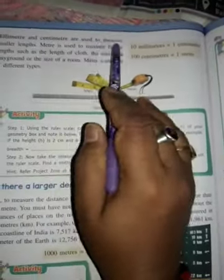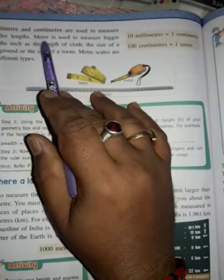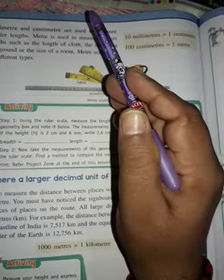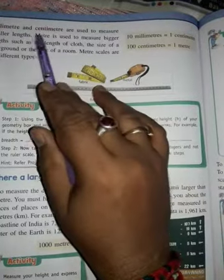Millimeters and centimeters are used to measure smaller lengths, while meters and kilometers are used for larger lengths.